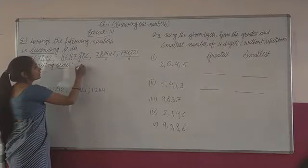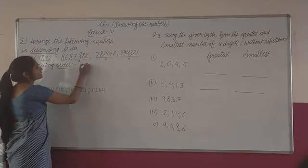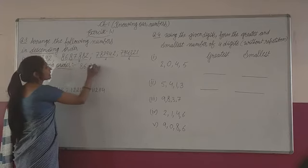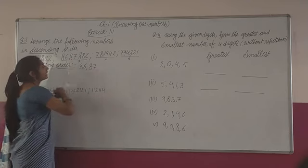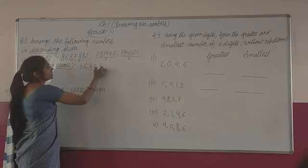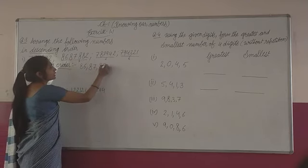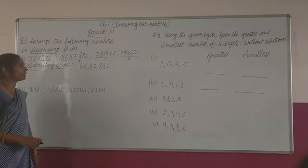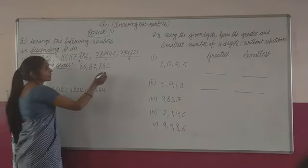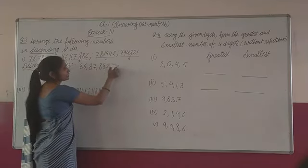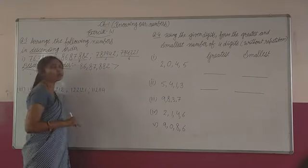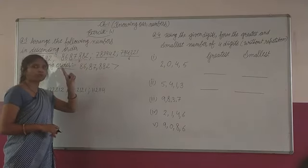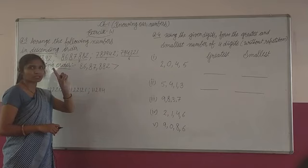How to write this number? 86,87,882. This number is the greatest number. So when we write the numbers, we put this sign — or you can use a semicolon and leave one finger space. Clear?